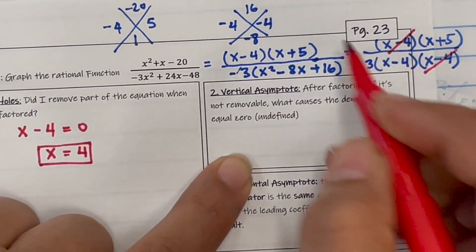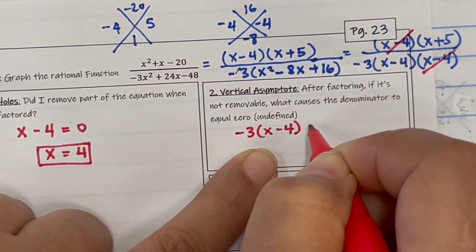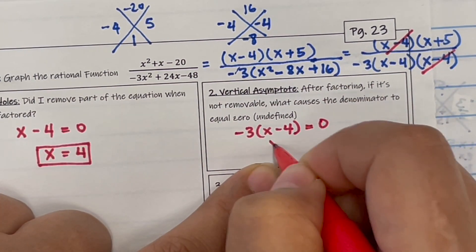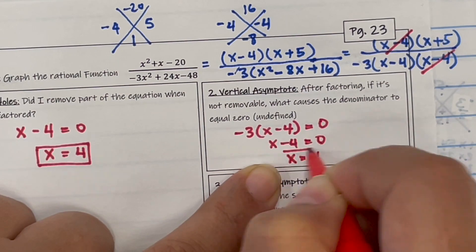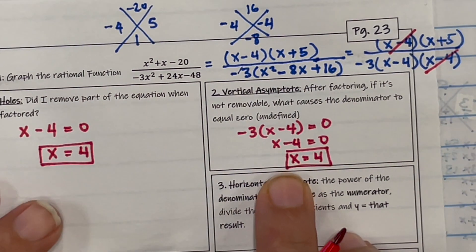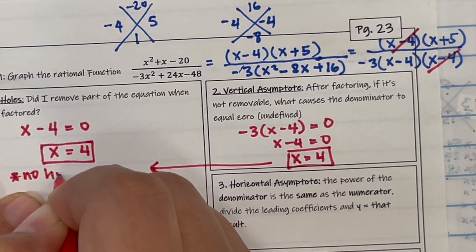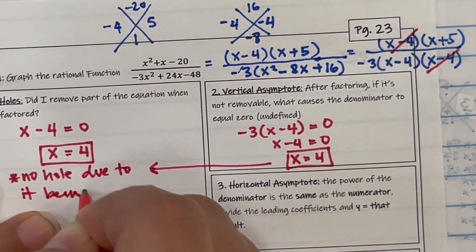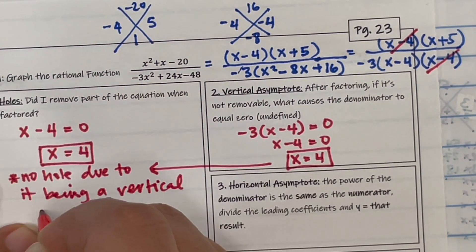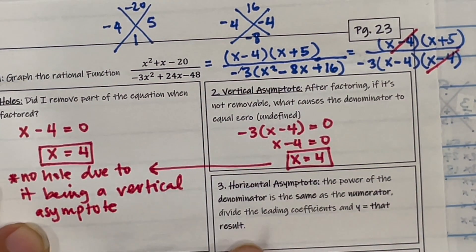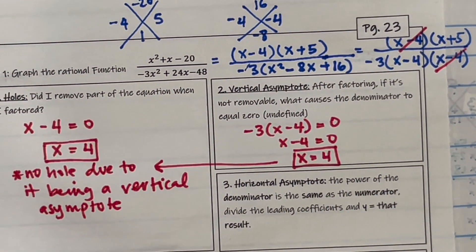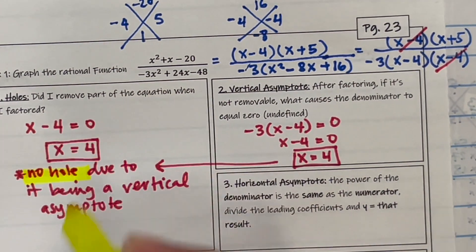Vertical asymptotes. After you take out the holes, is there any vertical asymptote? So you set the denominator equal to 0. So x minus 4, you take it to the other side, it's going to be positive 4. We cannot have a vertical asymptote and then also have a hole. So there is no hole because that is the vertical asymptote. There will not be a hole because there's no graph there.